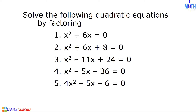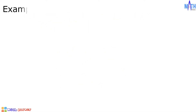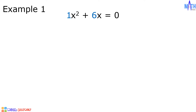Let us begin. Example number 1: x squared plus 6x is equal to zero. In this quadratic equation, a is equal to 1, b is equal to 6, and c is equal to zero. There is no constant term in this equation. Since the constant term is missing, we can factor this by its common monomial factor. The common monomial factor here is x.